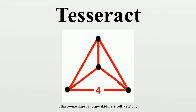As a duoprism, a Cartesian product of two squares, it can be named by a composite Schläfli symbol 4×4, with symmetry order 64. As an orthotope it can be represented by composite Schläfli symbol with symmetry order 16. Since each vertex of a tesseract is adjacent to four edges, the vertex figure of the tesseract is a regular tetrahedron.